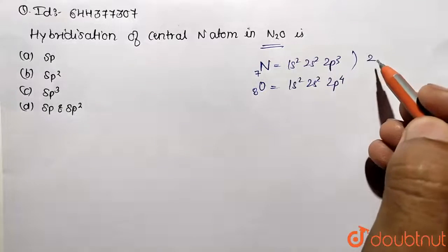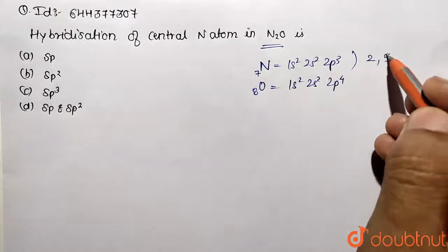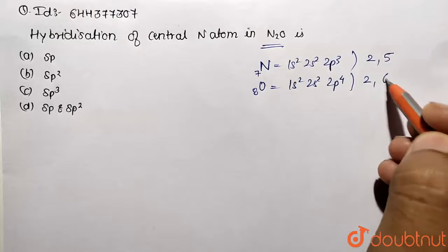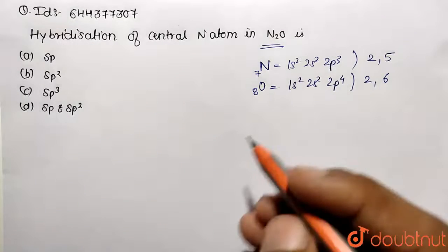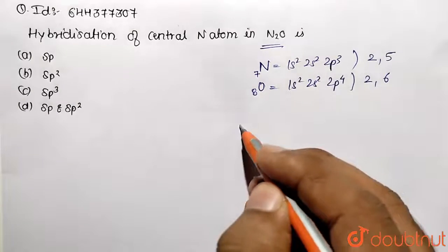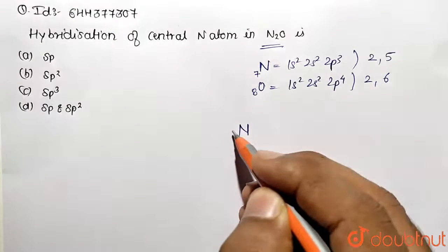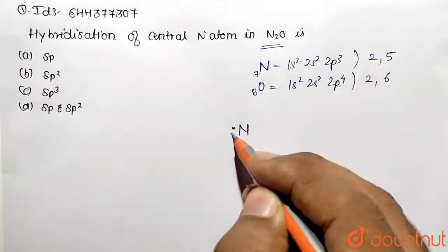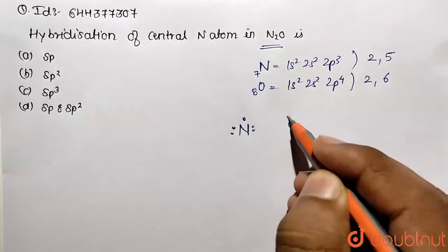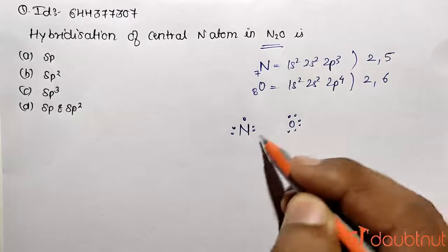Writing the electronic distribution: nitrogen has two electrons in the first shell and five in the second shell. Oxygen has two in the first shell and six in the second. The valence electrons for nitrogen are five, and for oxygen are six.